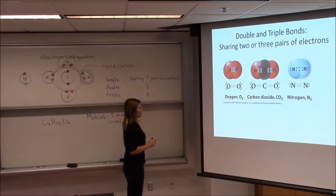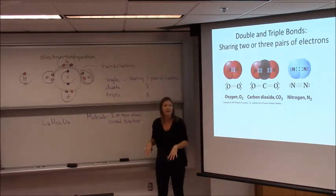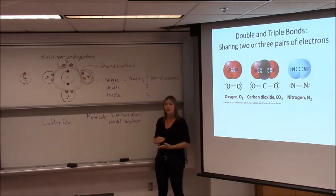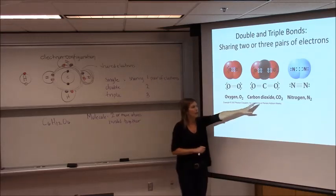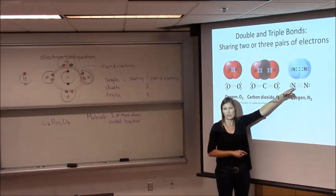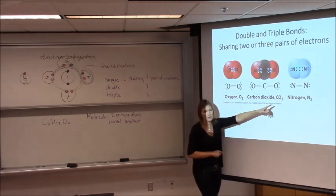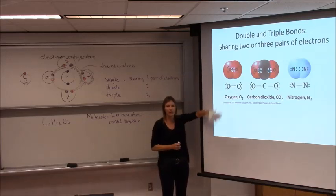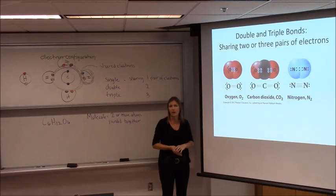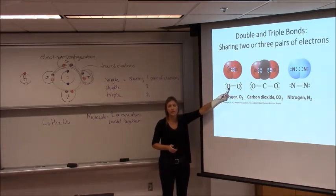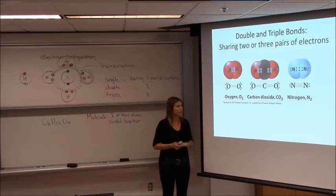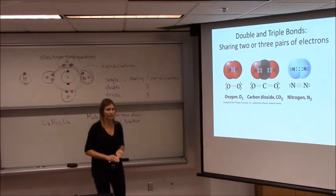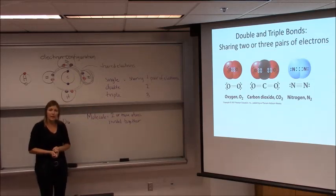Finally, the triple bond: nitrogen has three covalent bonds, sharing three pairs of electrons. Those covalent bonds store a huge amount of energy — a lot of potential or stored energy. When we break them, the energy is released. What do bad guys make out of nitrogen? Nitrogen fertilizer — they make bombs. When this triple bond is broken, it's very explosive. Same for oxygen: you've probably seen fire hazard or explosion hazard stickers on oxygen tanks. This double bond stores a lot of energy, and when it's broken it releases a lot of energy. So single, double, and triple covalent bonds — sharing one, two, or three pairs of electrons — are the strongest of the chemical bonds.